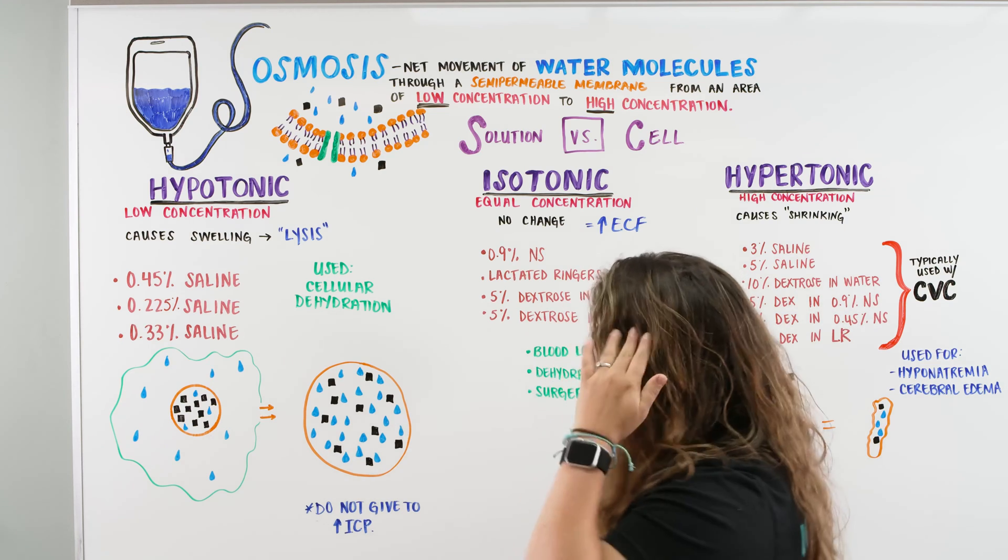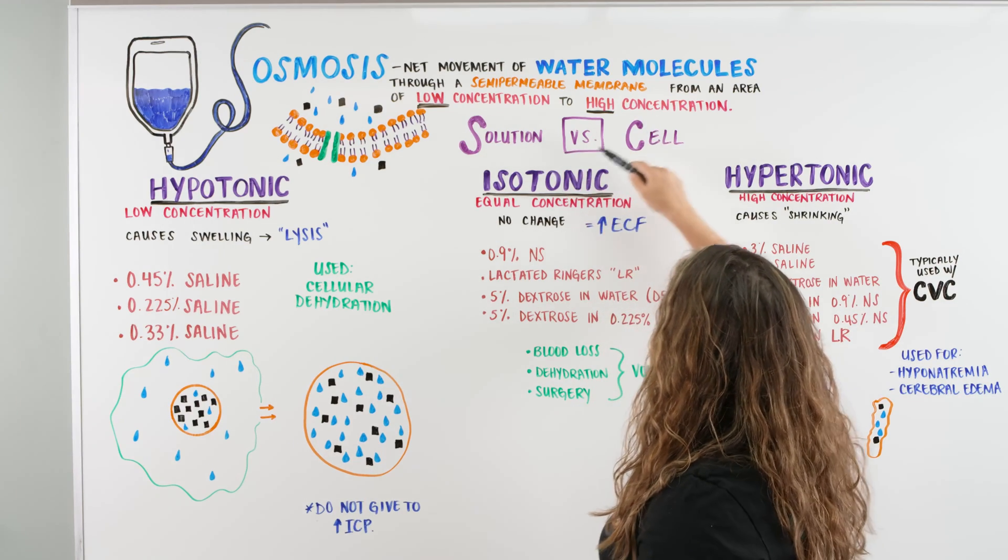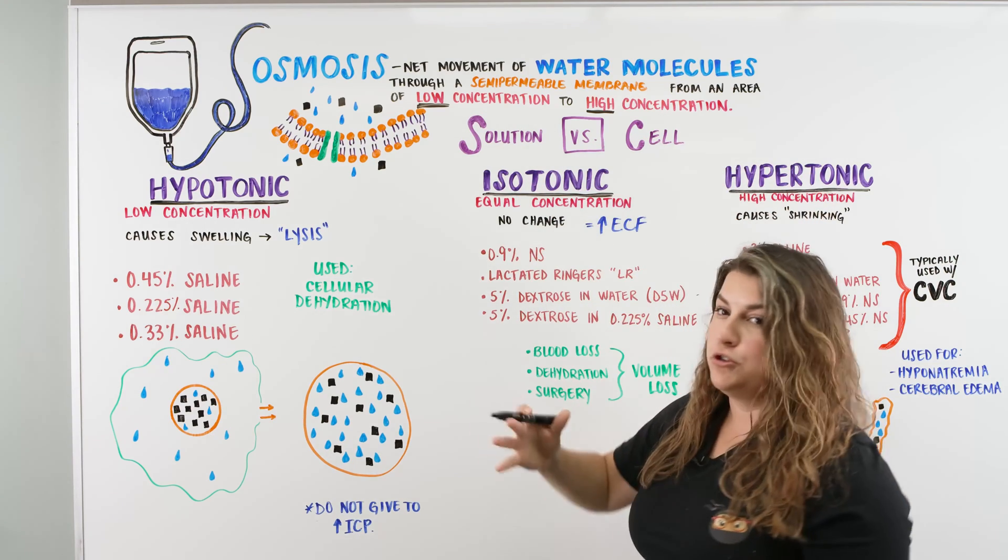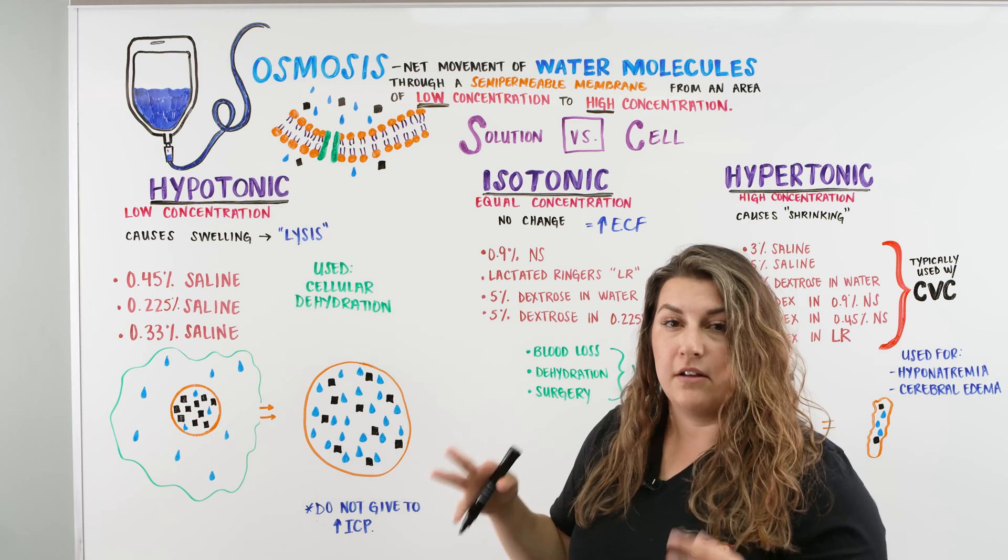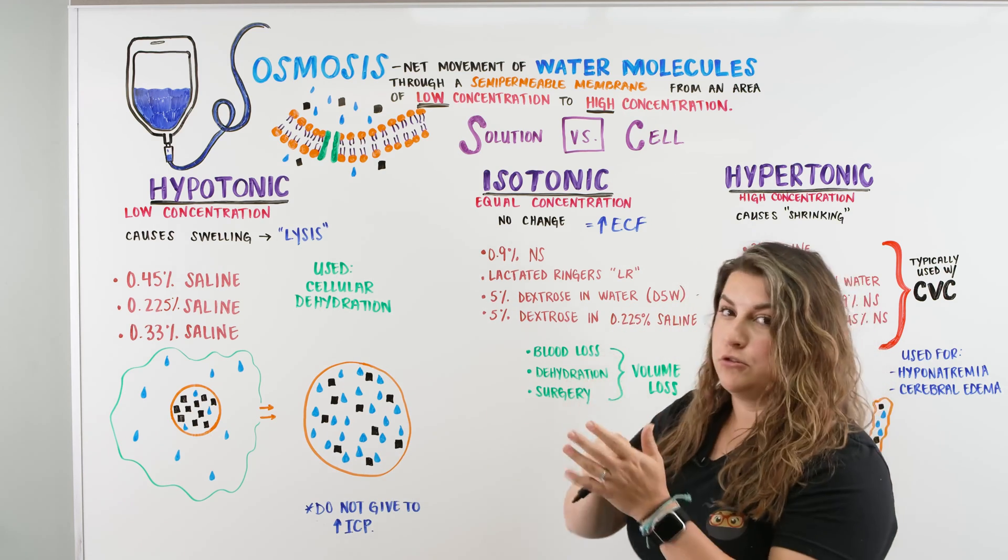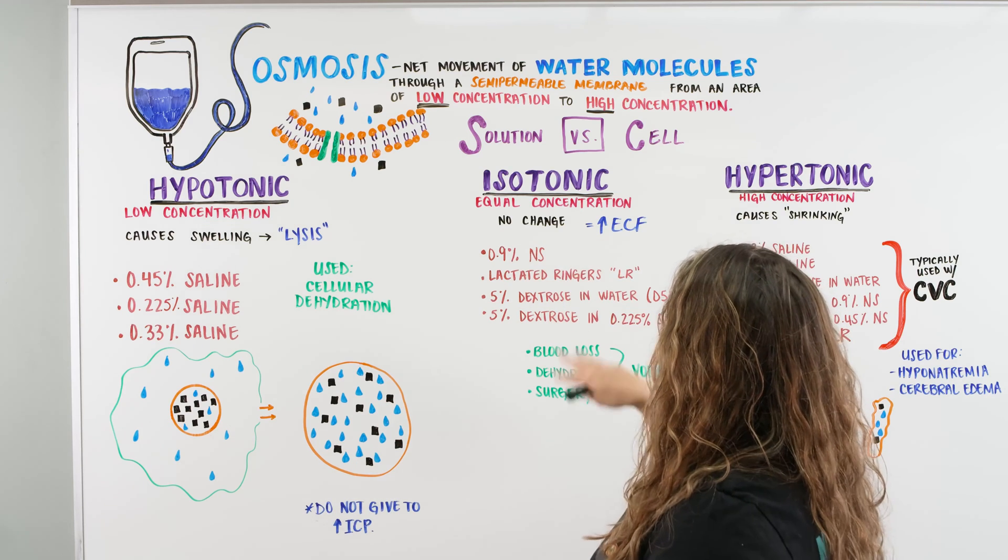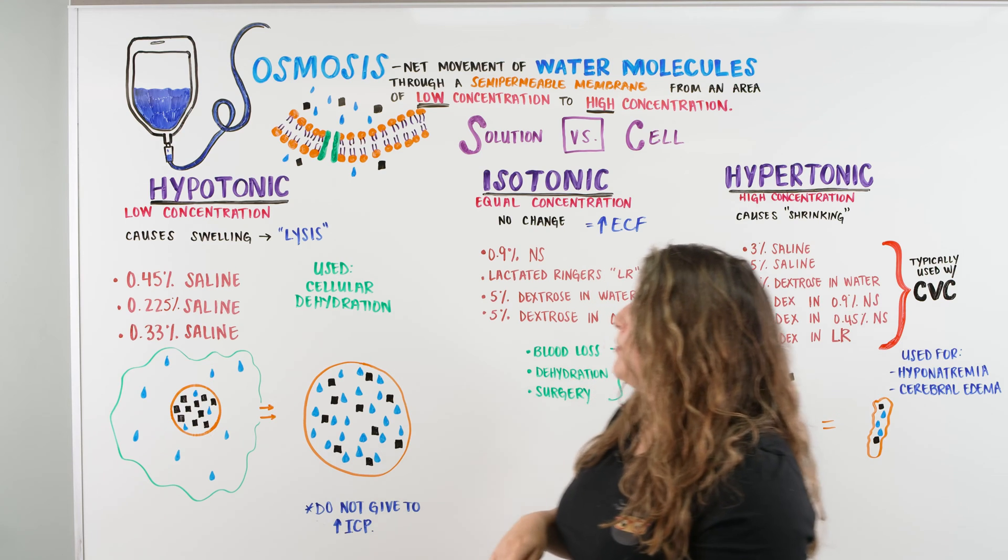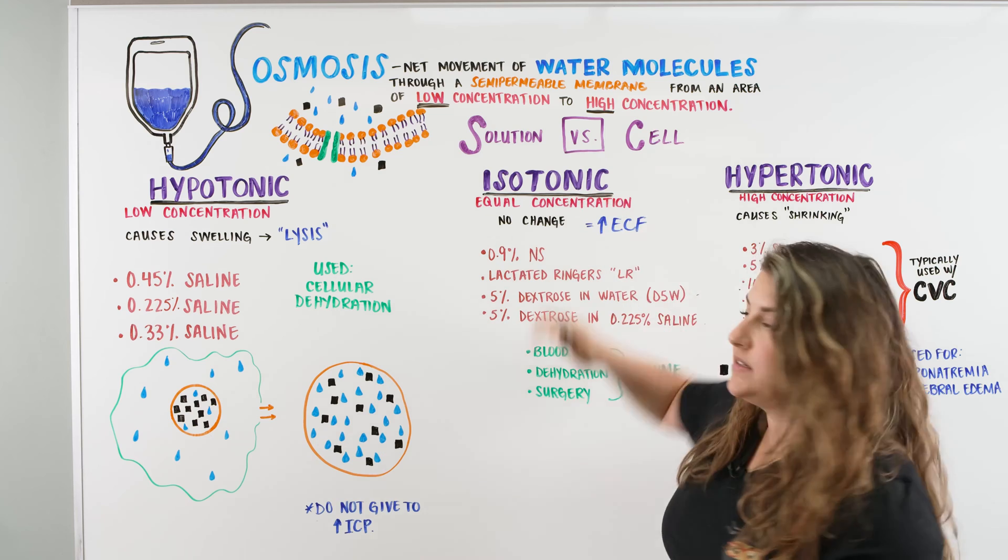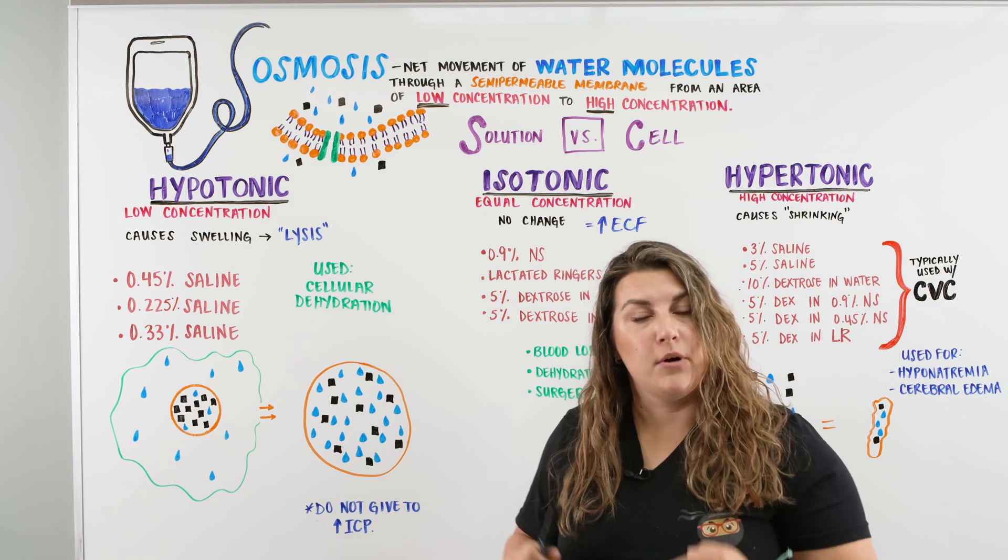So the way I remember it and the way it's easier for me and for nurses is to look at the solution versus the cell. So for every single one of these, we're going to write down solution versus the cell because that allows me to remember, okay, if I'm going from a low to a high and I have this solution versus the cell, then I'm going to be able to figure out how this is moving and how this is affecting our cell. Because remember, when we talk about the movement of water, our cell is always constant within our body. It's going to be our constant for us. And we're going to look at the fluid based upon that constant.